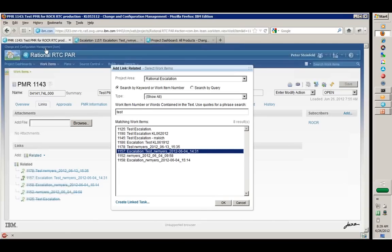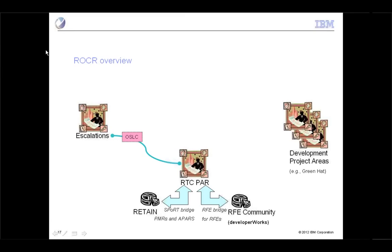I've just demonstrated some of the capabilities possible because this OSLC linkage exists between RTC-PAR and Escalation. To make this happen, we needed the RTC-PAR project area, the escalations project area, and this OSLC friendship between these project areas. For the demo, I needed accounts in both of these things and completed authentication before starting. In addition to the friendship between RTC-PAR and escalations, we also have an OSLC friendship between existing development project areas and escalations.